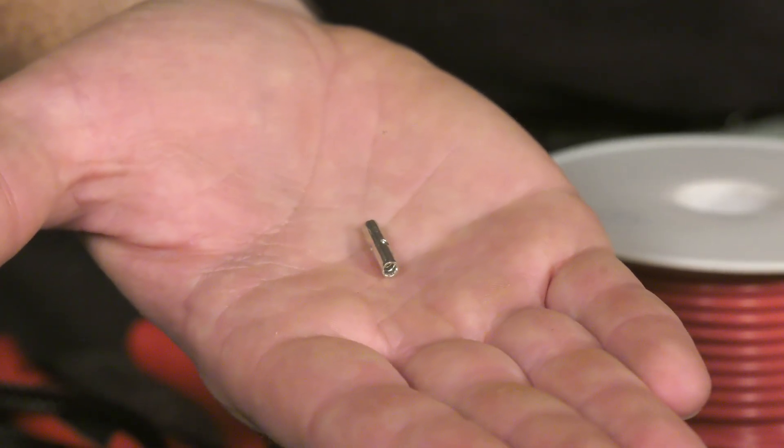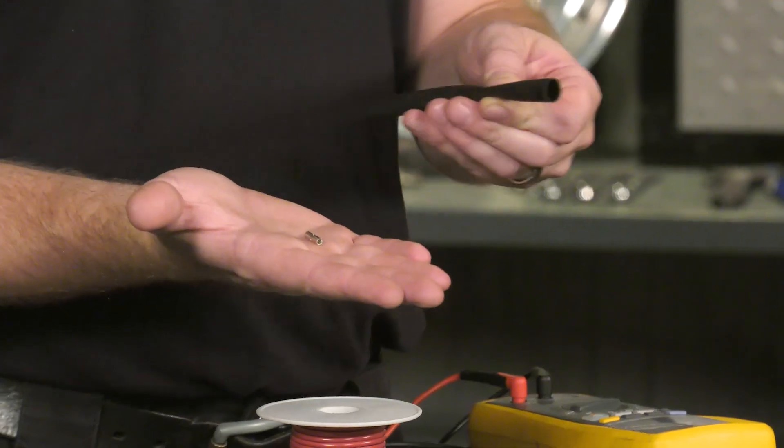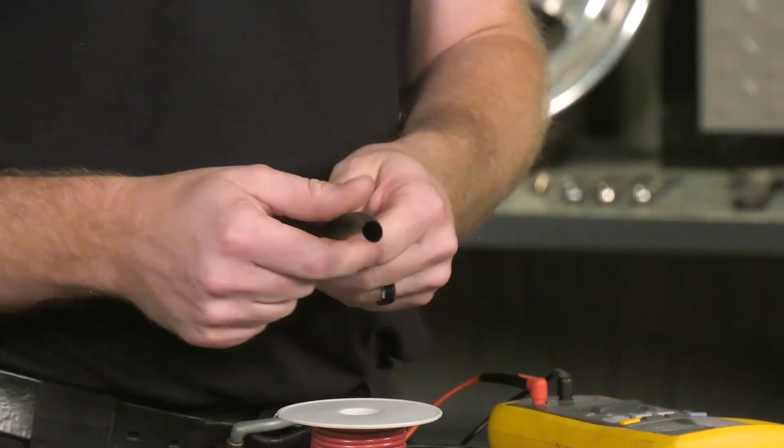So to remedy this situation of the bad soldered connection, I would introduce a butt connector. This particular one, it's non-insulated and we're going to use some heat shrink after we crimp it. Strip our wire, insert in the butt connector, crimp the terminal, and then cut off some heat shrink, go around the outside of it, heat it up, and it comes down and brings a good connection there.